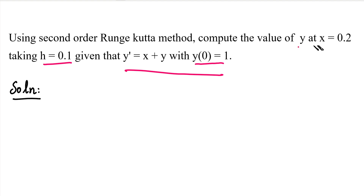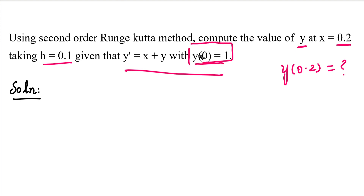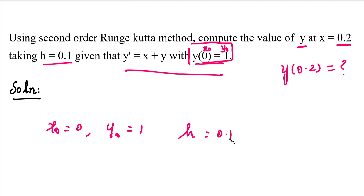If x is 0.2, then we ask y of 0.2 — that is y(0.2), the required value. We have an initial condition. x₀ value is 0, y₀ value is 1, and h value is 0.1. We need to find y(0.2), so we choose a two-step solution.